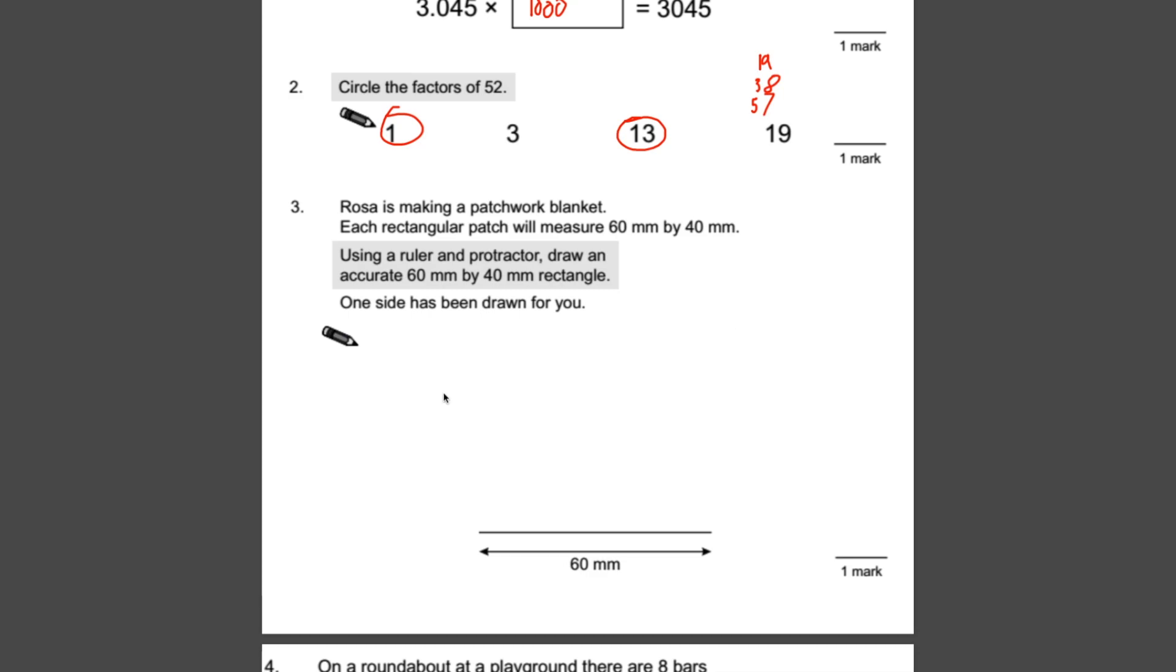Number three, you need a ruler and a protractor for this. So obviously, I can't do that with you, but I'll do my best to answer the question for you. Rosa is making a patchwork blanket. Each rectangular patch will measure 60mm by 40mm. Using a ruler and a protractor, draw an accurate 60mm by 40mm rectangle. One side has been drawn. So obviously, if you're going to measure that, that would be 60. You'd use your ruler then and your protractor to make sure that you get an absolutely perfect right angle. The right angle is what they're going to be measuring. So imagine you've used a protractor. You've got it perfect.